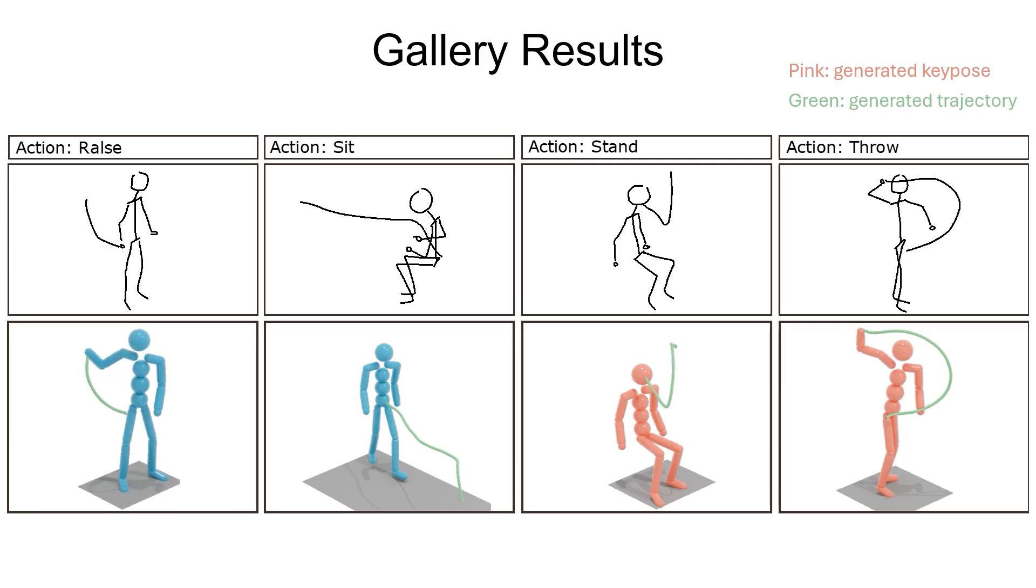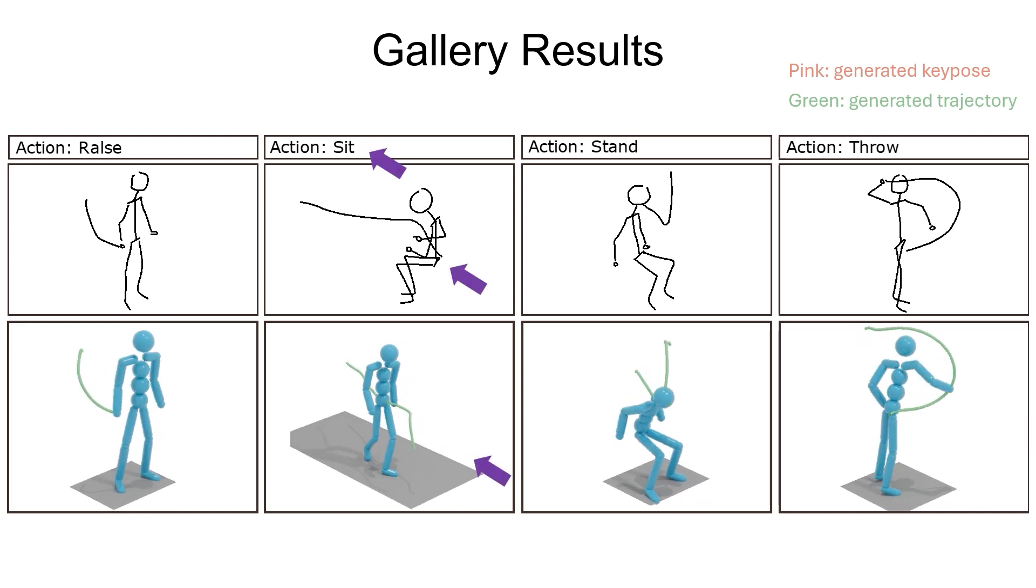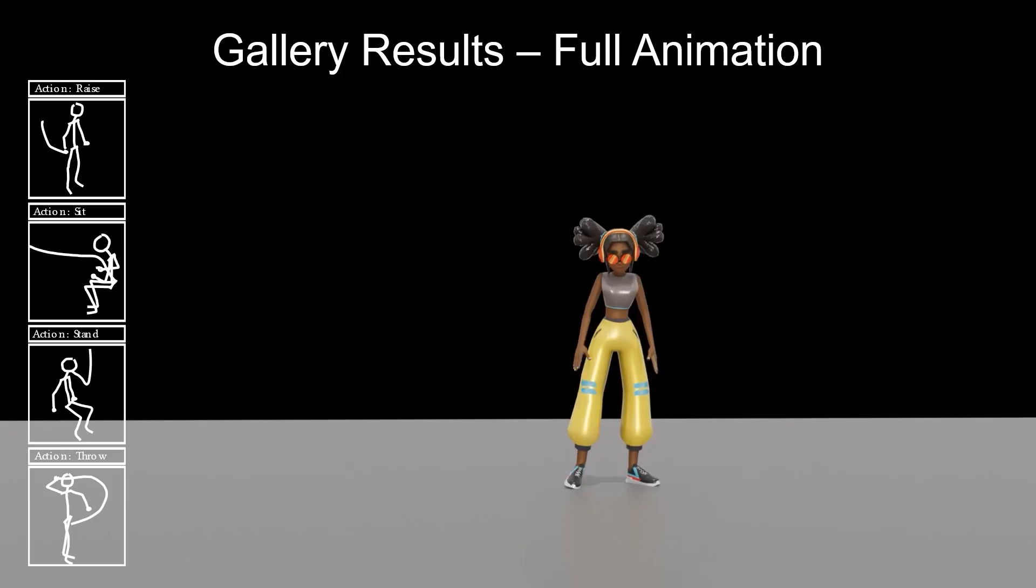The key pose can be placed not only in the first frame, but also in the last frame. For example, the action sit. Here is the full animation.